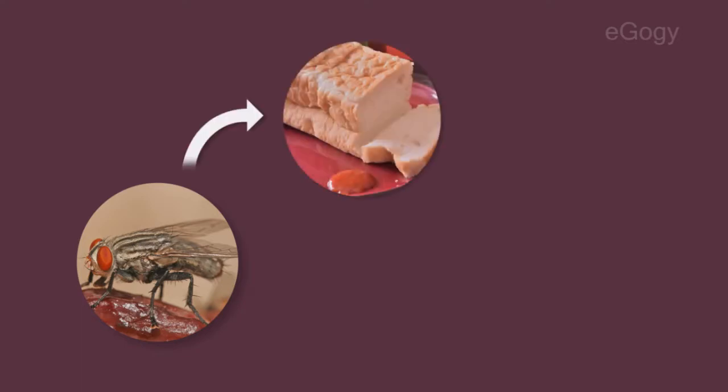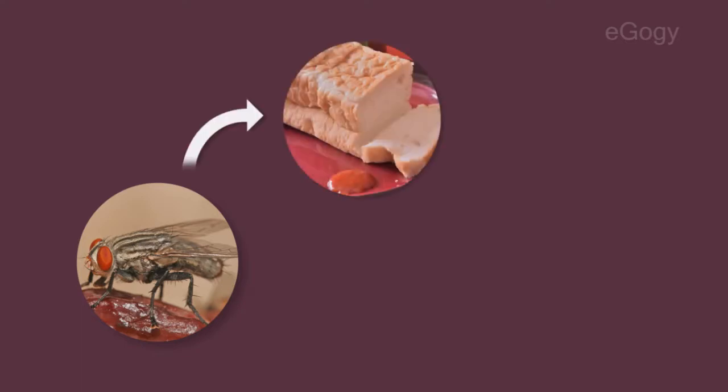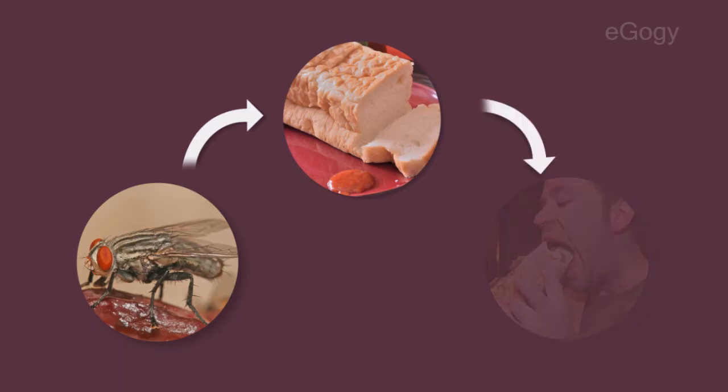The germs are carried on their hairy bodies, legs, and in their stomachs. When flies land on things like food, cups, knives, and plates, the germs can be passed on to these articles. If people then eat the food or use these articles, they will get the germs into their bodies.